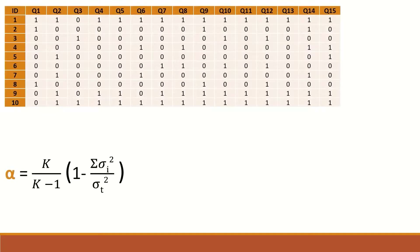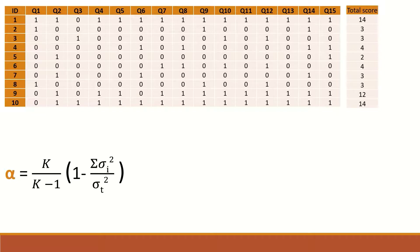In the next slide, a table and the Cronbach's alpha equation are shown. The table represents exam results for 10 students who answered 15 multiple choice questions. A correct answer is recorded as 1 and an incorrect answer as 0. To evaluate this exam, we will use the Cronbach's alpha equation, and the first step is to calculate the total score achieved by all the students.